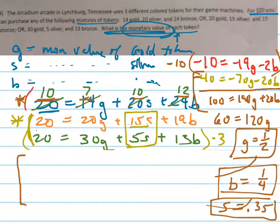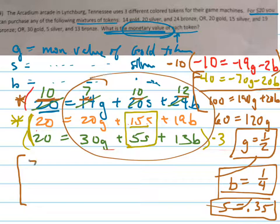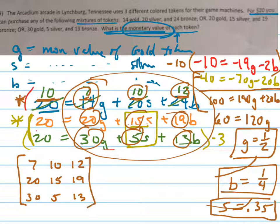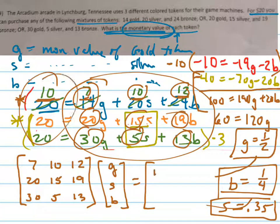If you turn these into matrices, we're going to turn this side into a matrix first. We're going to write 7, 10, and 12, 20, 15, 19, 30, 5, and 13. Notice that I just pulled off all of the coefficients of each variable. That's all I'm doing, pulling off the coefficients. This is called, appropriately, the coefficient matrix. Then I'm going to take, I want G, S, and B, and that's going to be equal to these three things right here, 10, 20, 20.